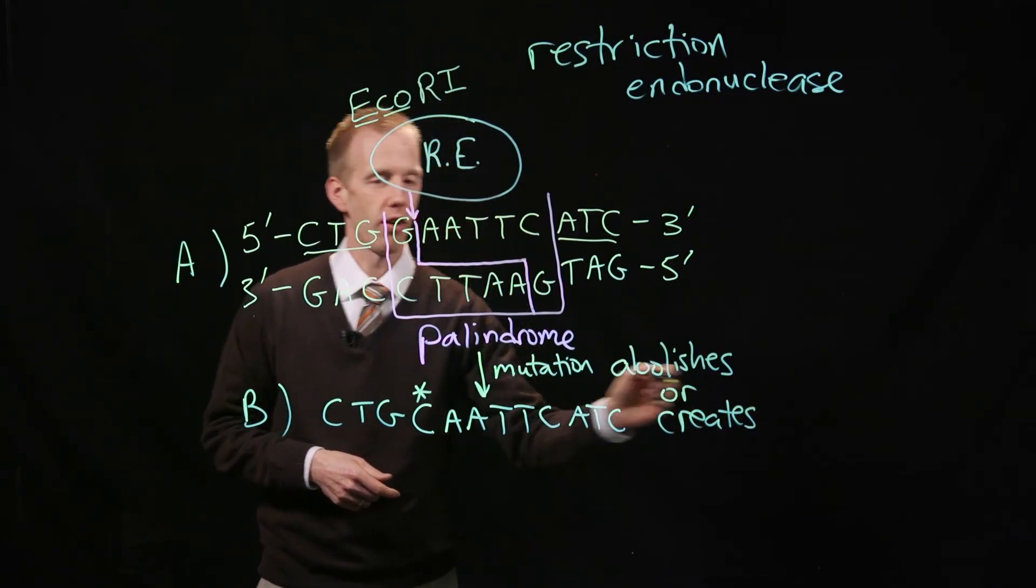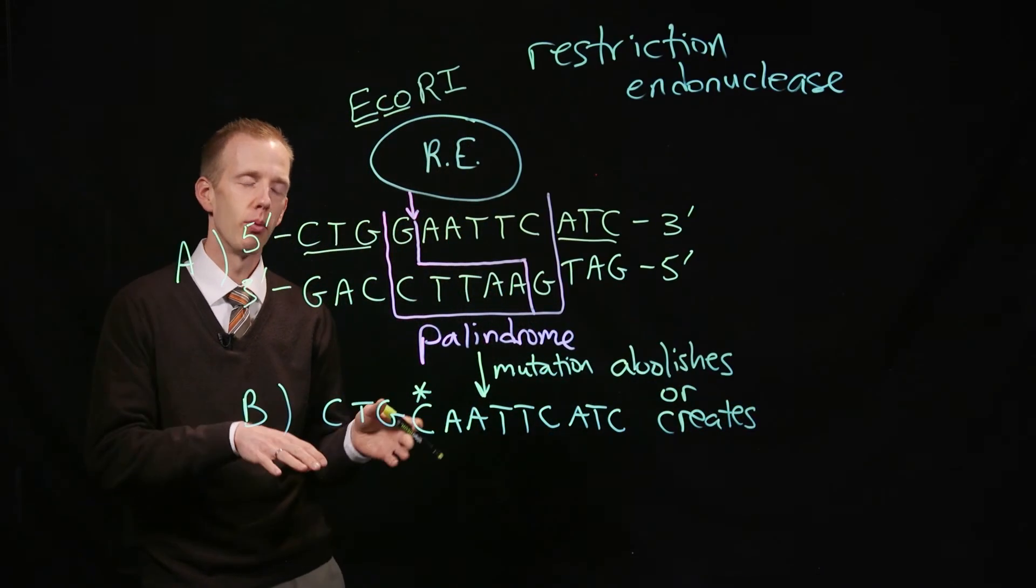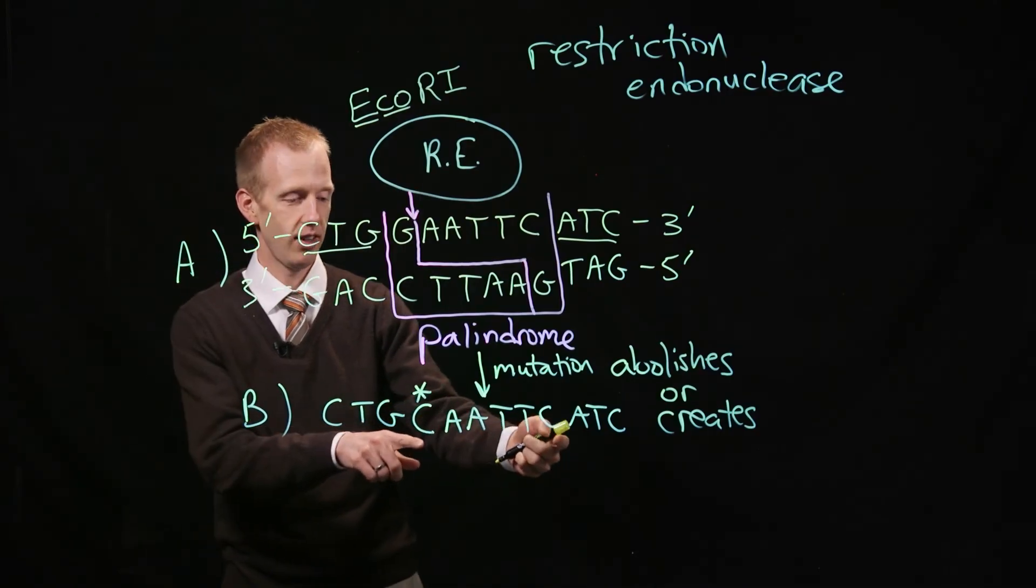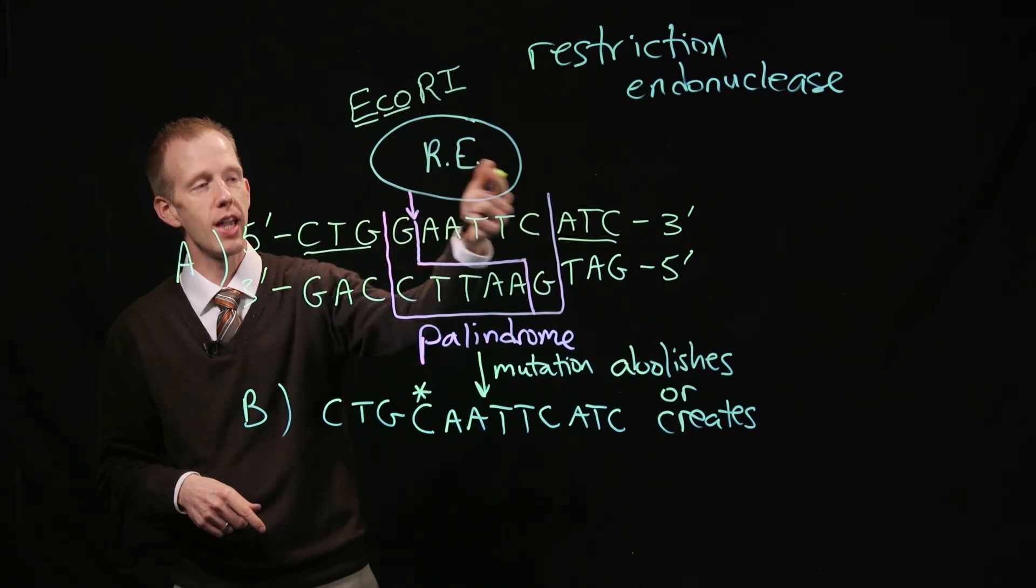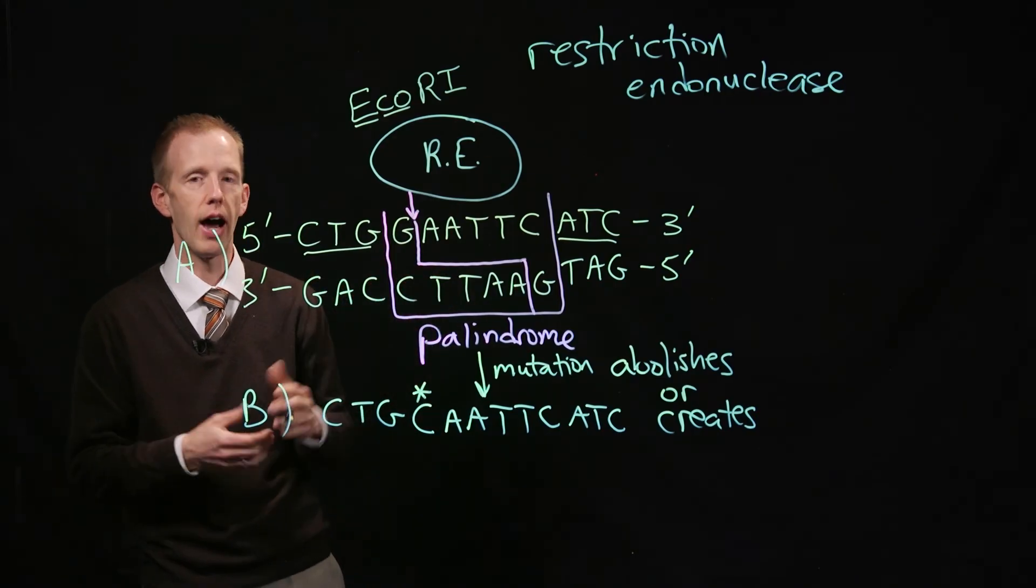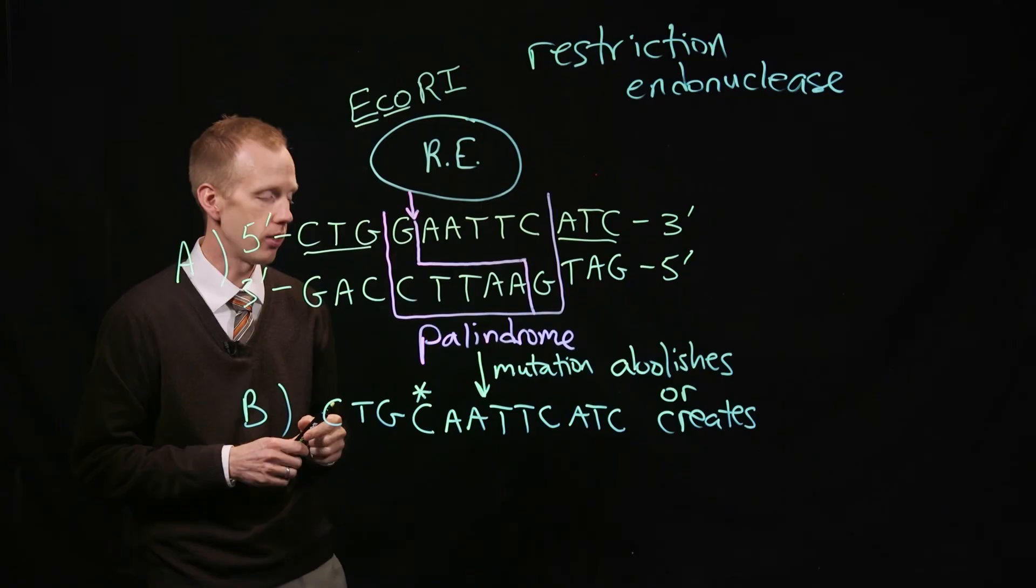This mutation gets rid of a restriction site, or you could also have mutations that take a chromosome that doesn't have a restriction enzyme site. If there was a mutation from a C to a G, that would create a restriction enzyme site that would allow an enzyme to digest this piece of DNA.